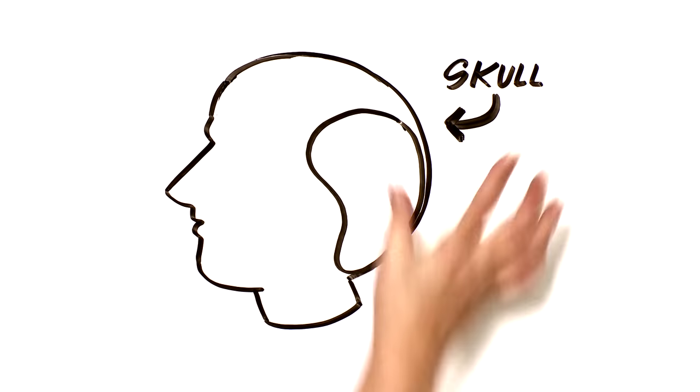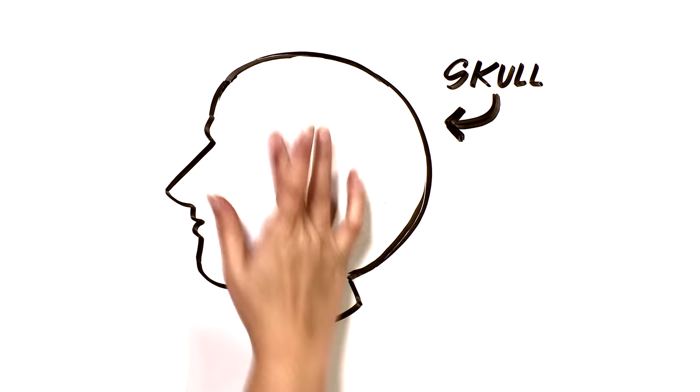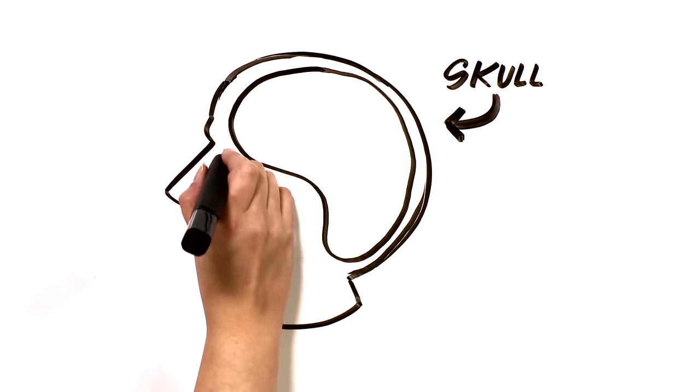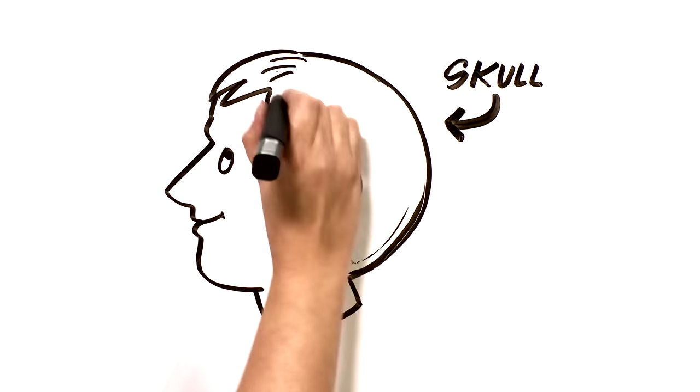Second, when you twist your ankle or bang your knee, you might see bruising, scrapes, or swelling on the outside. But this isn't the case with your brain. It gets injured and nobody really knows.